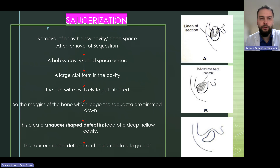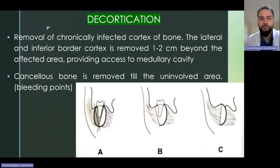Saucerization is the removal of the bone hollow cavity or dead space after removal of sequestra. A hollow cavity or dead space occurs and a clot forms. This defect can accumulate large amounts of material. Decortication involves removal of the chronically infected cortex bone. The lateral inferior cortex is removed one to two centimeters beyond the affected area, providing access to the medullary cavity. Cancellous bone is removed to the uninvolved area or bleeding points.